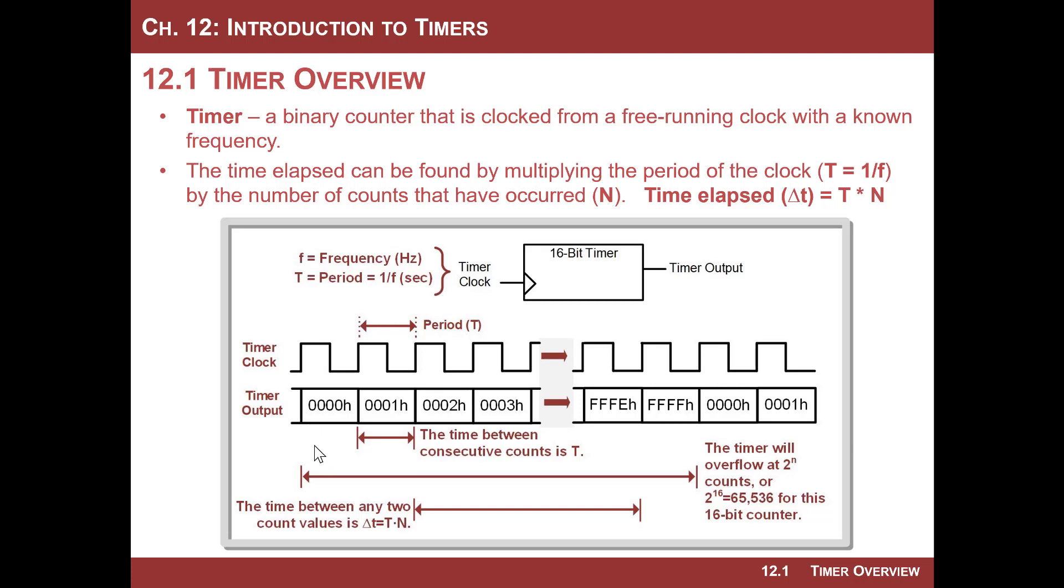So, for example, if you started at some number like 0002h, and then you went out and looked at the counter, and it said, oh, I'm 0002h, and then you went and did something else, and you came back, and it was FFFEh, you could just take the difference between those count values and say, I'm going to multiply that by the period of the clock, and that will tell me the real time that has elapsed.